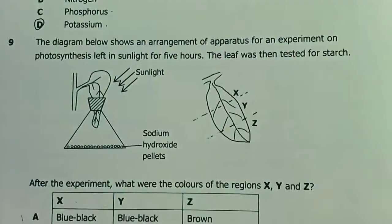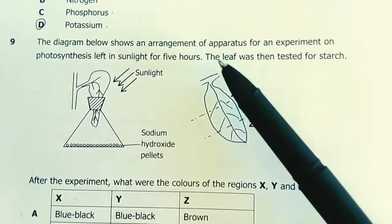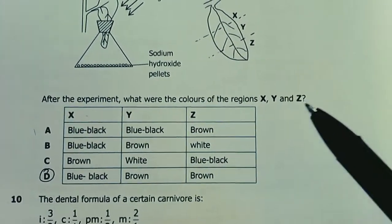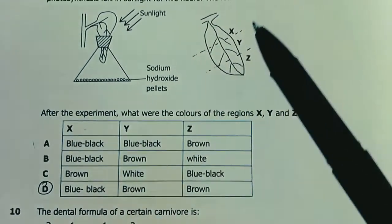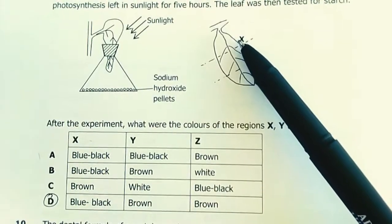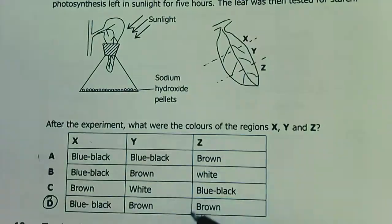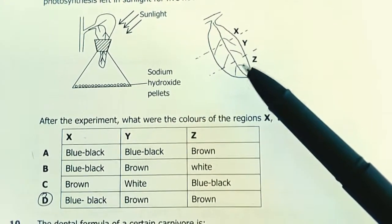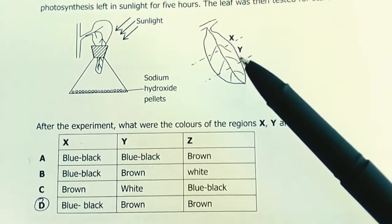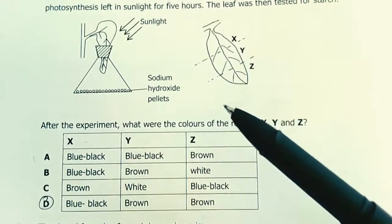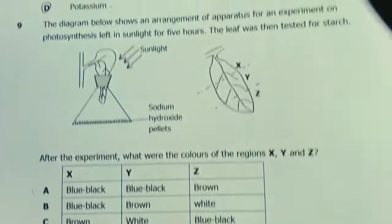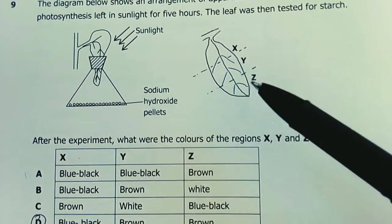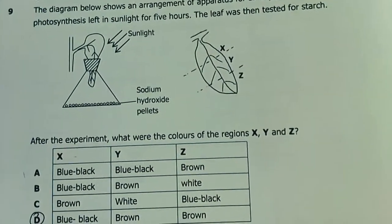This point won't have air and won't have light, water will be present, so photosynthesis won't be completed. This part will have starch. We expect part X to test present, and here starch will be absent. After the experiment, what were the colors of the regions XYZ? They tested it for starch. My answer is D because this part will be blue-black, then brown and brown. These will remain brown because iodine solution was added. If there was no testing, the parts would be white, but they tested for starch, so the color will be brown, the color of iodine solution.